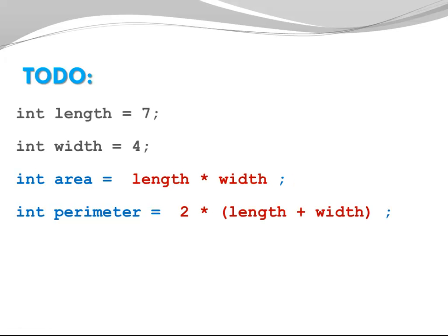So here are the solutions. The area is length times width, and the perimeter is 2 times the sum of length plus width. Notice I was using parentheses here, because otherwise my multiplication would have been executed first, and this was not my intent.